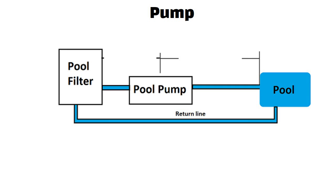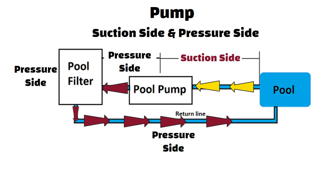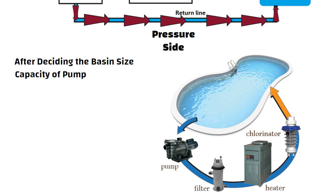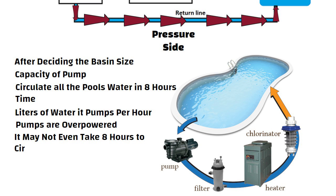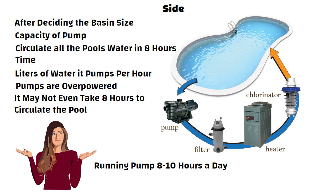Pump. A pool's plumbing system is generally categorized into two sections: the suction side and the pressure side. The suction side is the part of the plumbing that carries water from the pool towards the pump. The pressure side carries pressurized water away from the pump and back to the pool. After deciding the basin size, you need to decide the capacity of the pump. Generally the pump should have adequate capacity to circulate all the pool's water in eight hours. On many residential pools, the pumps are overpowered, so it may not even take eight hours to circulate the pool. If you don't know the power of your pump, running the pump eight to ten hours a day is a good rule of thumb.